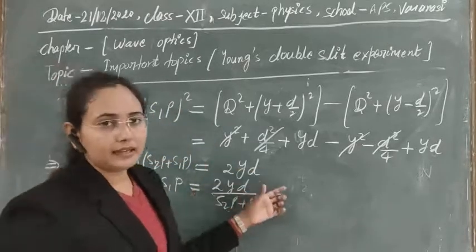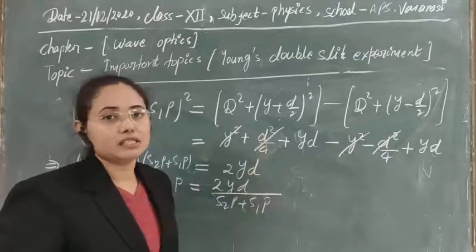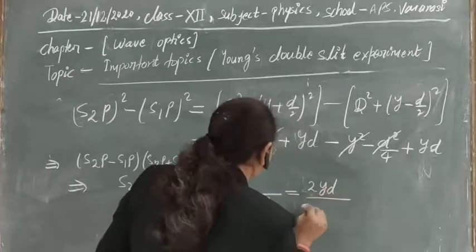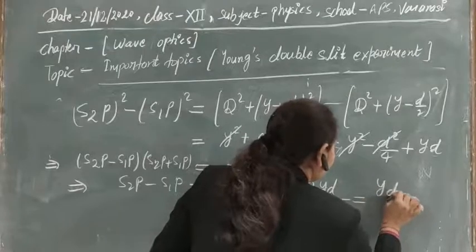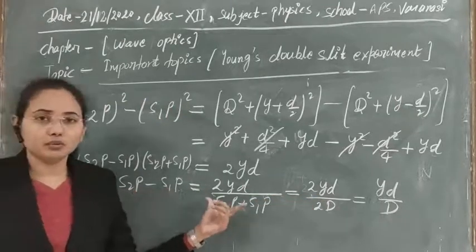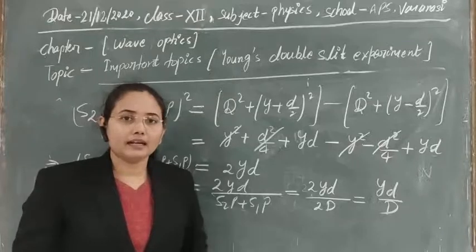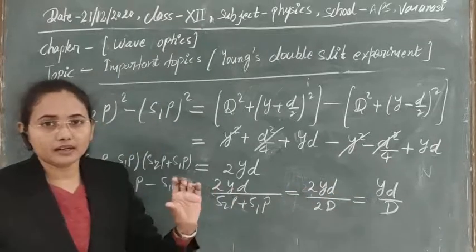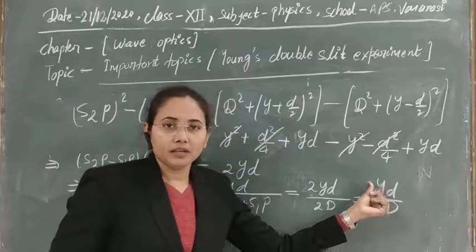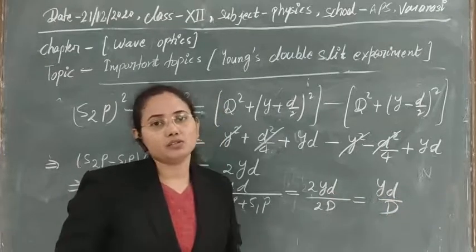After solving, the path difference comes out to yD/d — this is the final expression. So the path difference between two light waves emerging from coherent sources S1 and S2 and interfering at point P equals Δ = yd/D, where y is the distance of point P from central maxima, d is the distance between two sources, and D is the distance between source and screen.